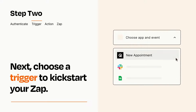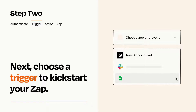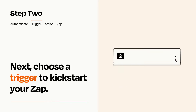Now let's set up your trigger, which is the event that starts your Zap. Pick the trigger event that you want from the list. When you set up this step, your Zap will pull in test data from your trigger app, that you'll see later when setting up your action app.